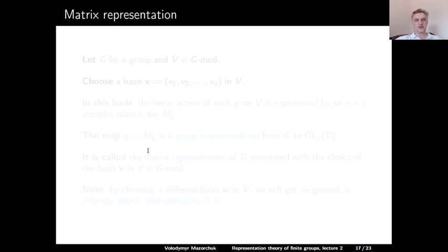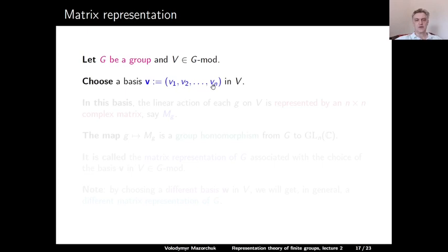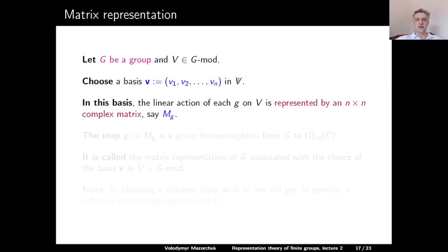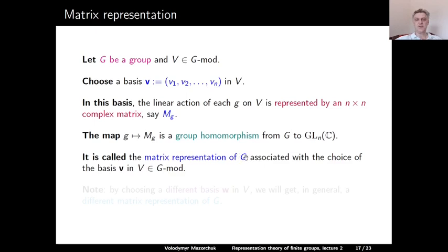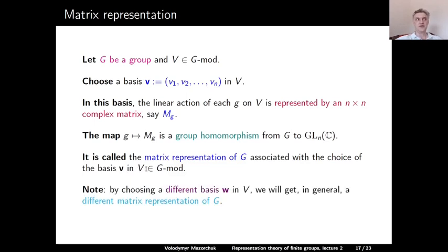Let us now talk about matrix representations. Let G be a group and V a G-module. Choose a basis bold-V = {v₁, v₂, …, vₙ} in V. In this basis, the linear action of each element g on V is represented by an n×n complex matrix M_g. The map g ↦ M_g is a group homomorphism from G to the group of all invertible n×n matrices with complex coefficients — called the matrix representation of G associated with our choice of basis. If we choose a different basis, we generally get a different matrix representation.